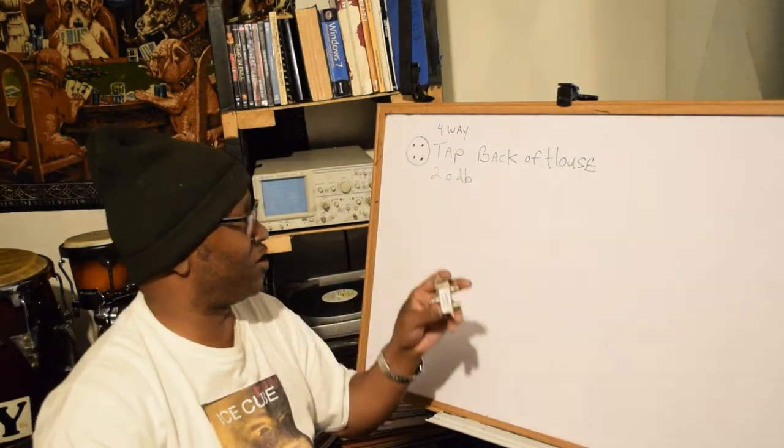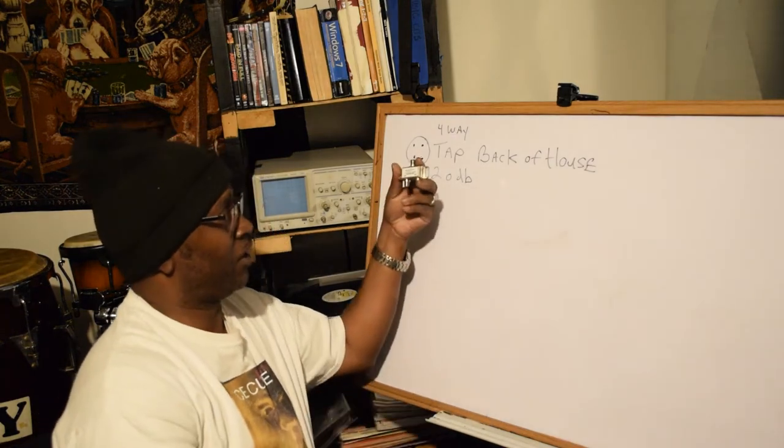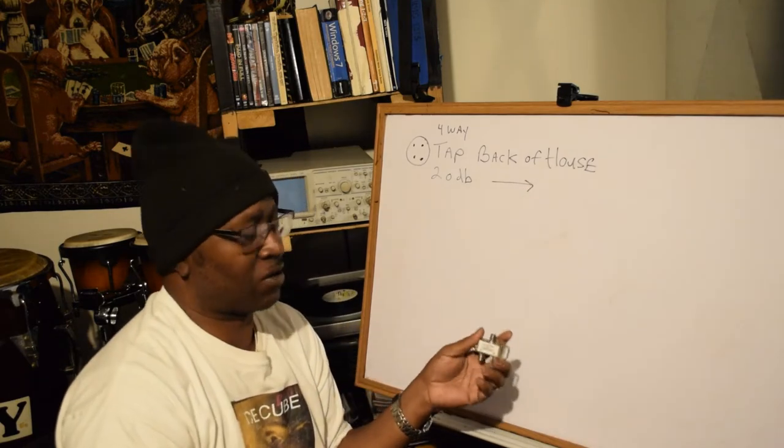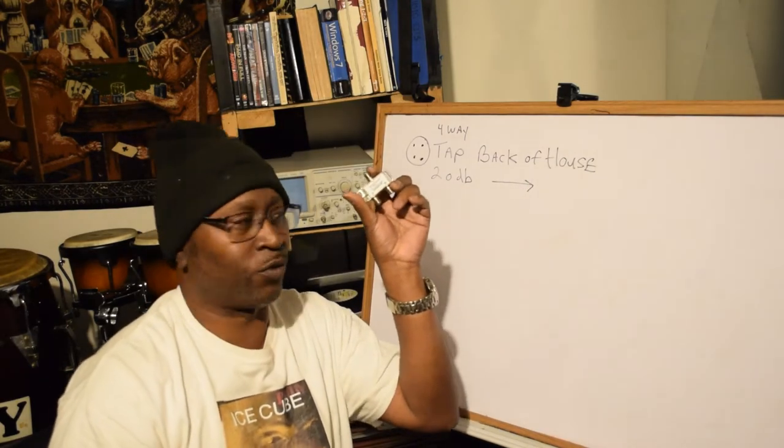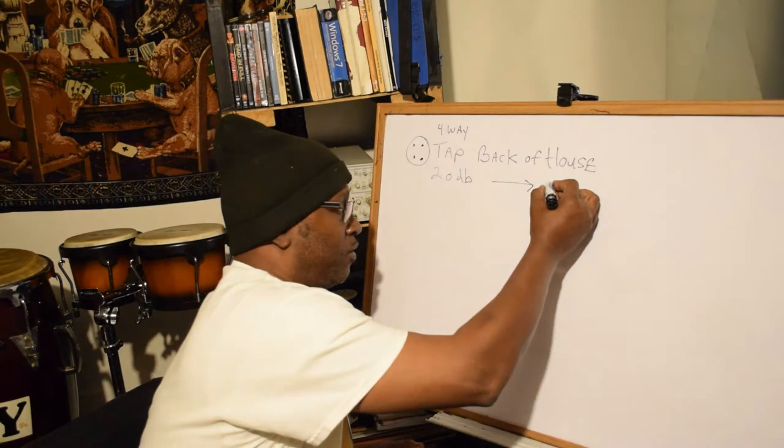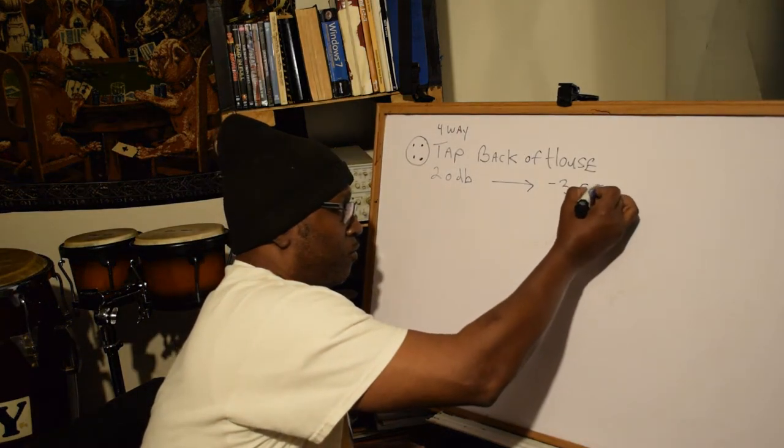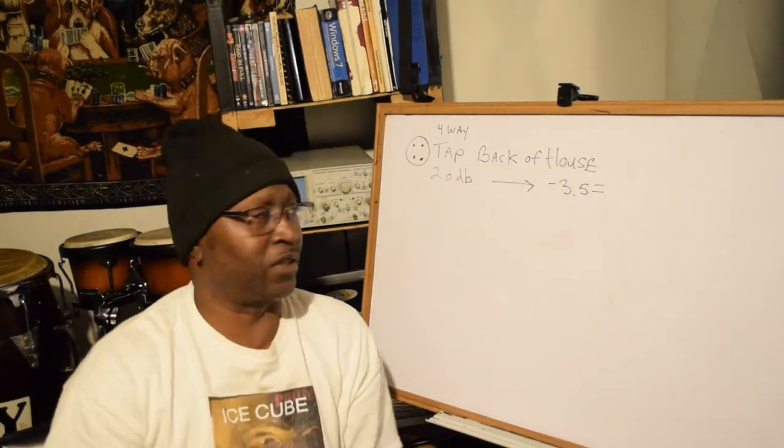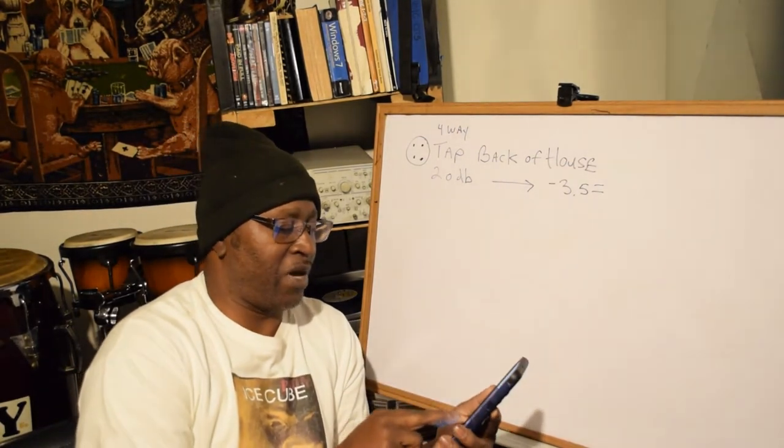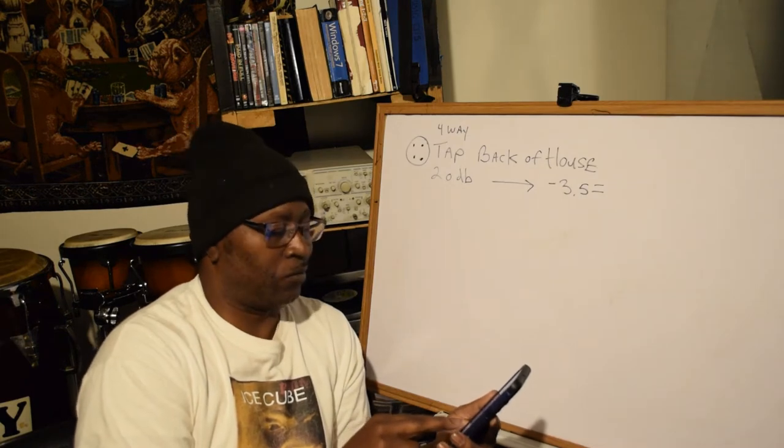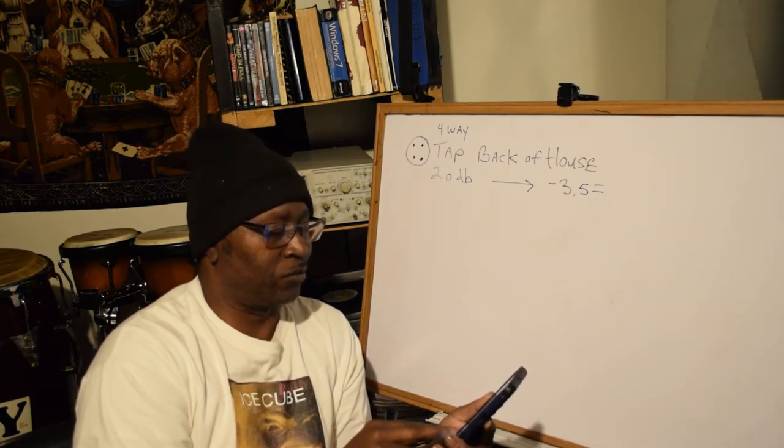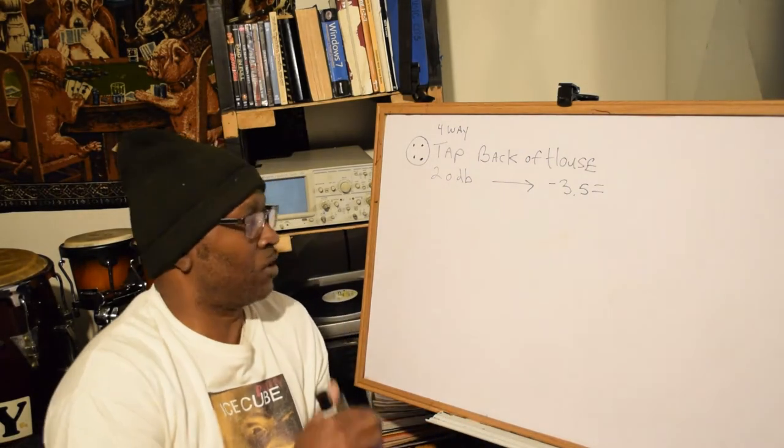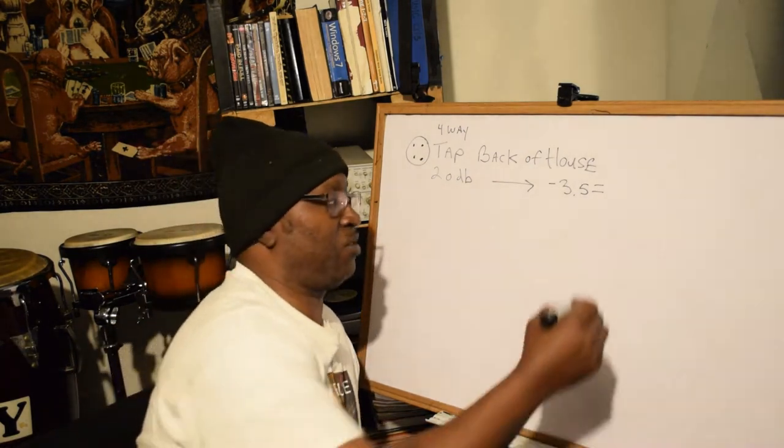If that has 20 dBs and this splitter here has a loss of negative 3.5, the math is 20 minus 3.5, that comes out to 16.5 dBs.